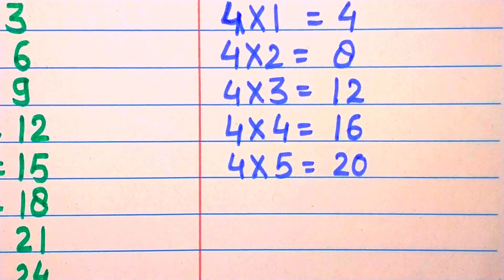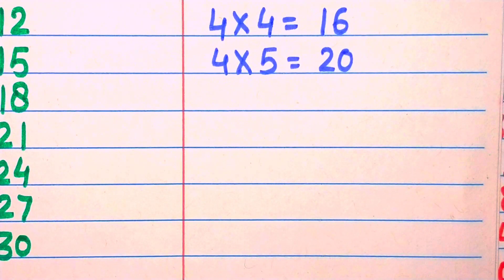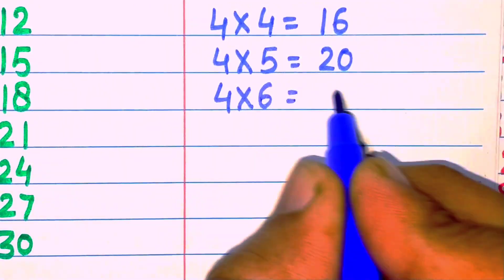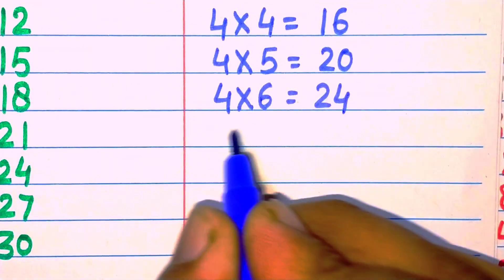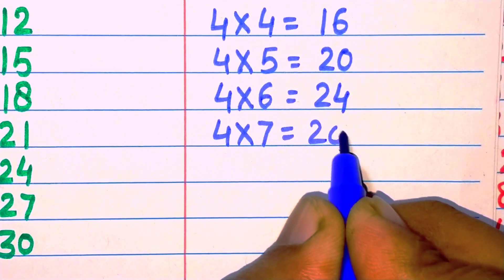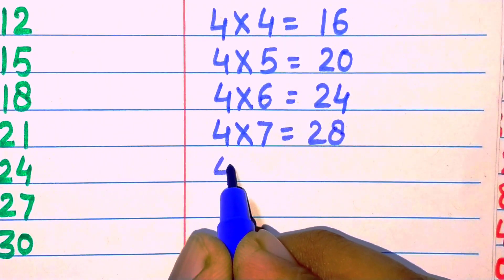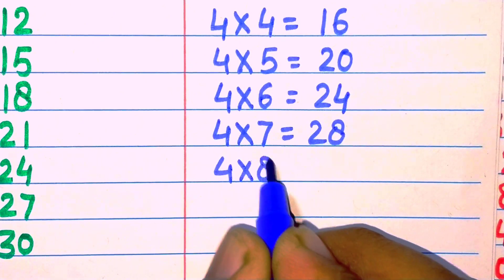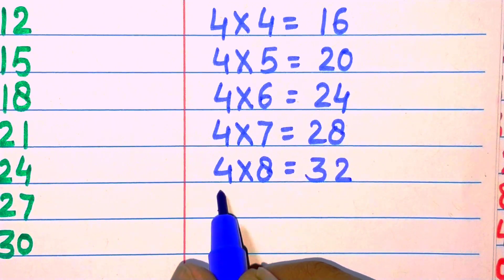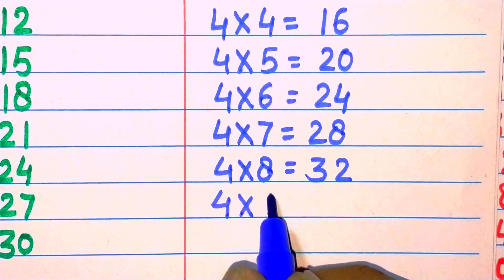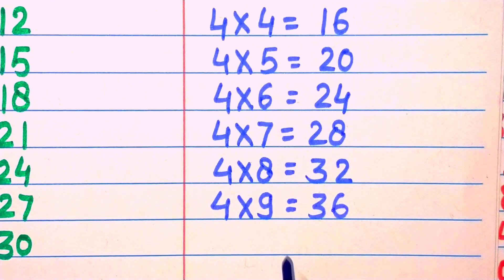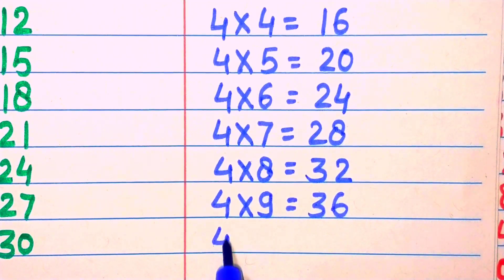Four six are twenty-four, four seven are twenty-eight, four eight are thirty-two, four nine are thirty-six, four ten are forty.